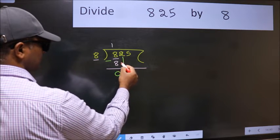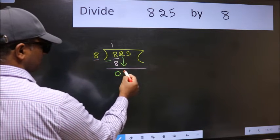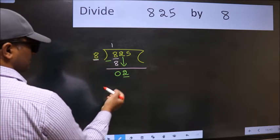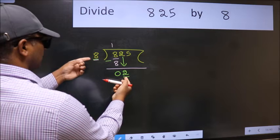After this, bring down the beside number. So 2 down. Now here we have 2 and here 8. 2 is smaller than 8.